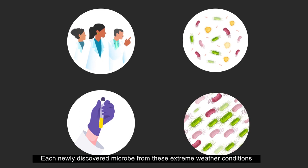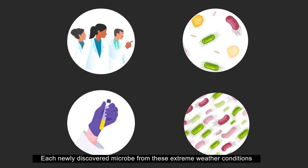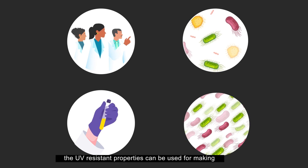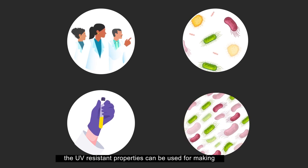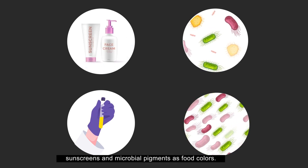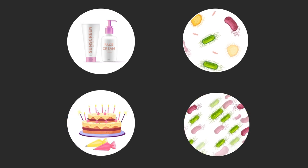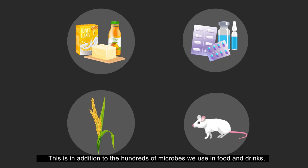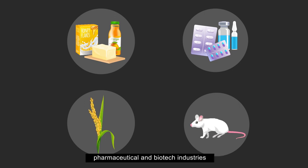Each newly discovered microbe from these extreme weather conditions is a treasure house of special properties. Maybe one day, the UV resistant properties can be used for making sunscreens and microbial pigments as food colors. This is in addition to the hundreds of microbes we use in food and drinks, pharmaceutical and biotech industries.